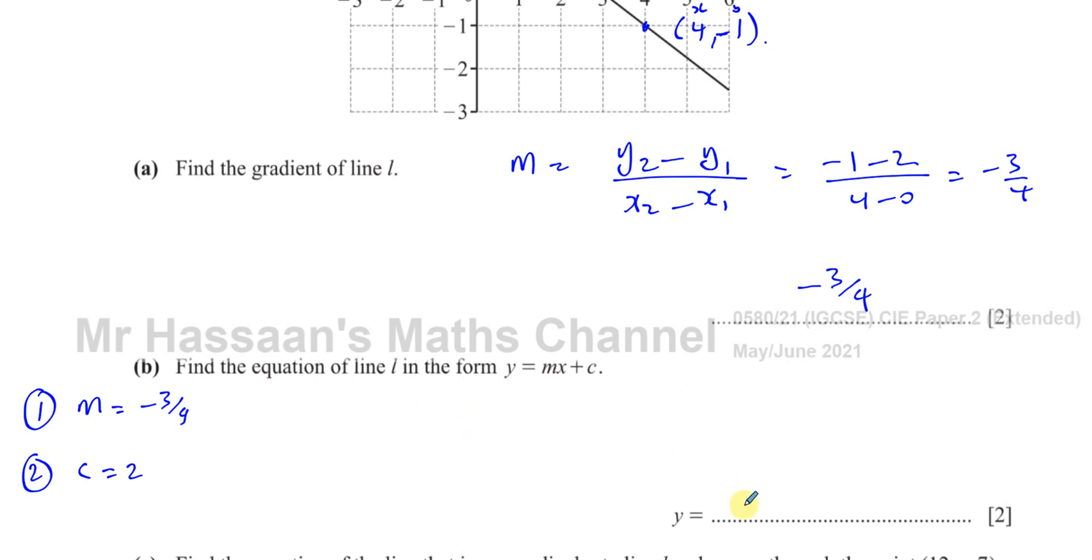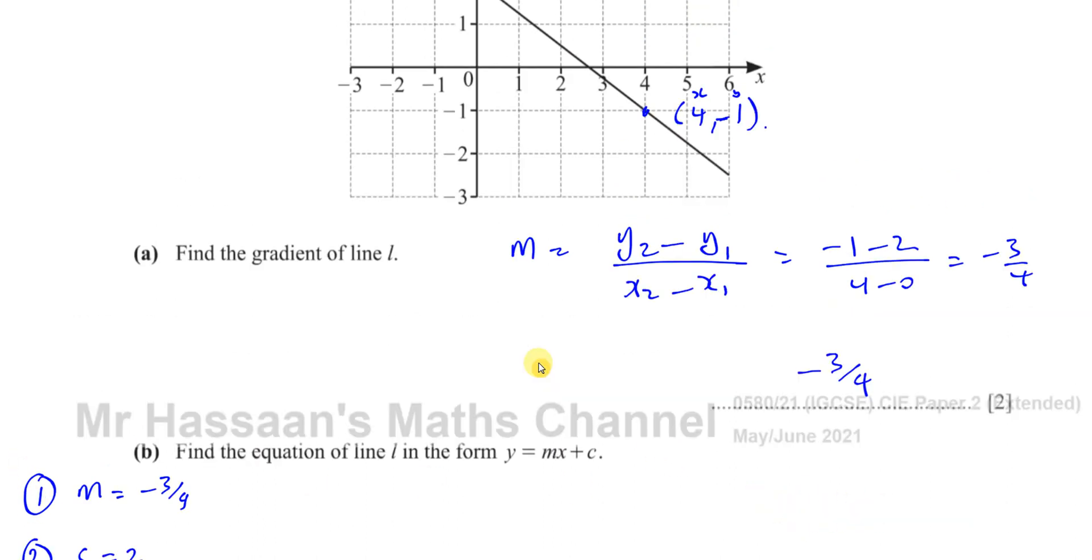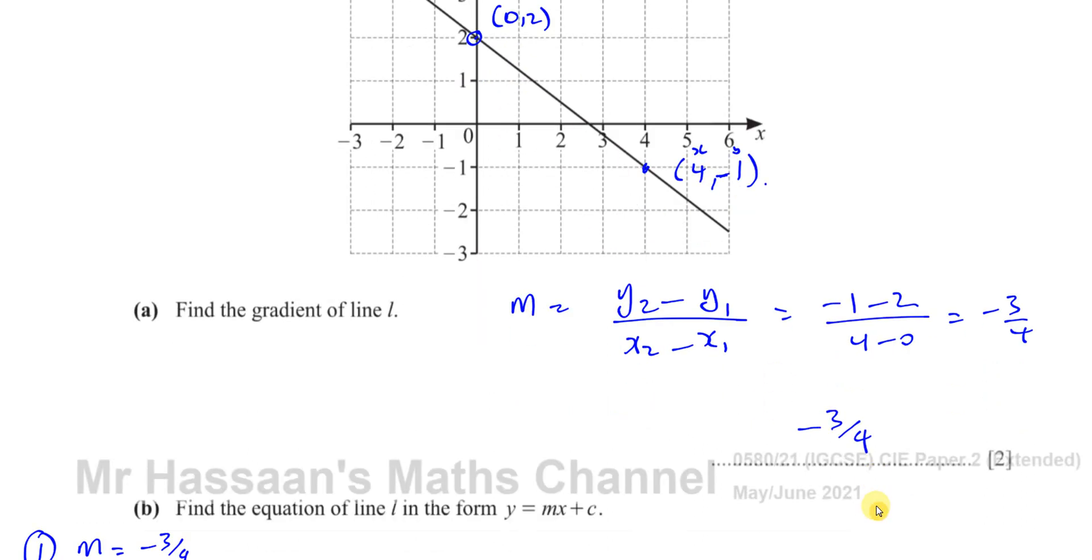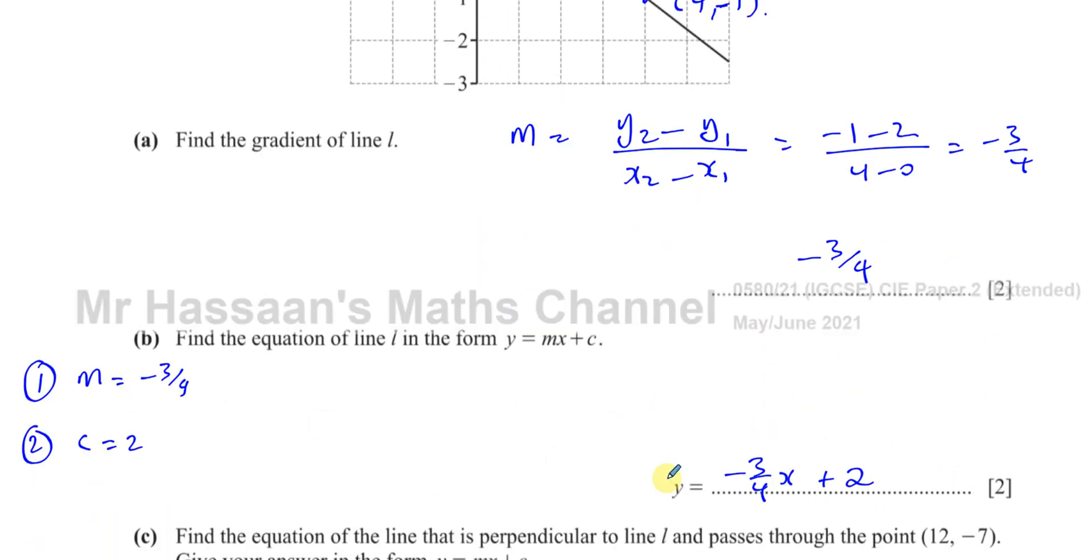So we can straight away just write down the equation of the line: Y equals minus 3 quarters X plus 2. We don't need to do any more calculation than that. That's fine because we can see the Y intercept. We know the gradient. We can just write the equation of the line down without any further calculation.